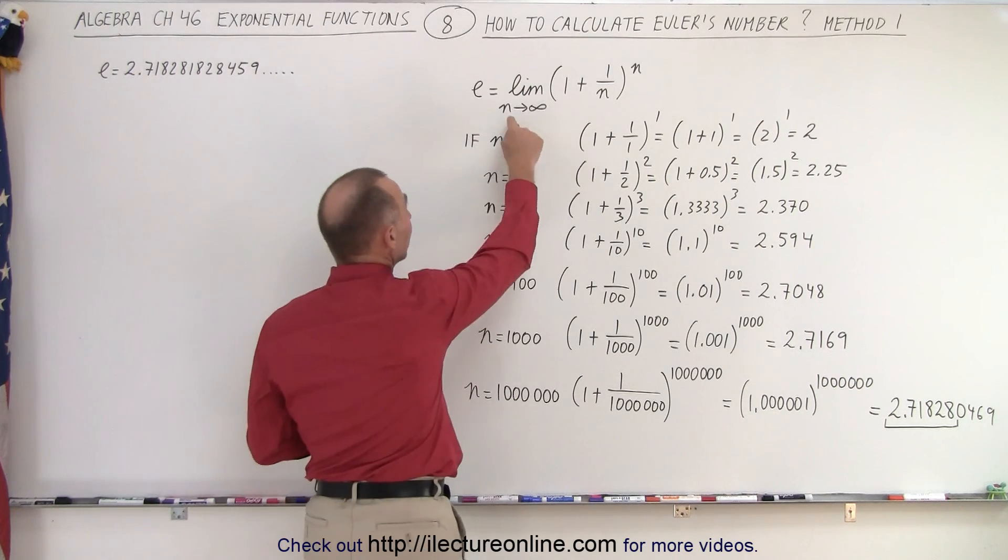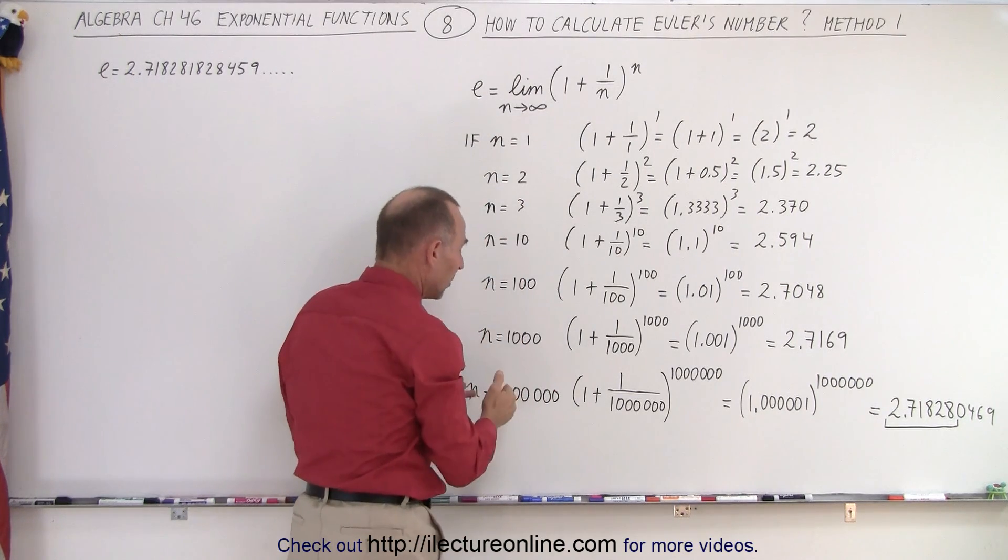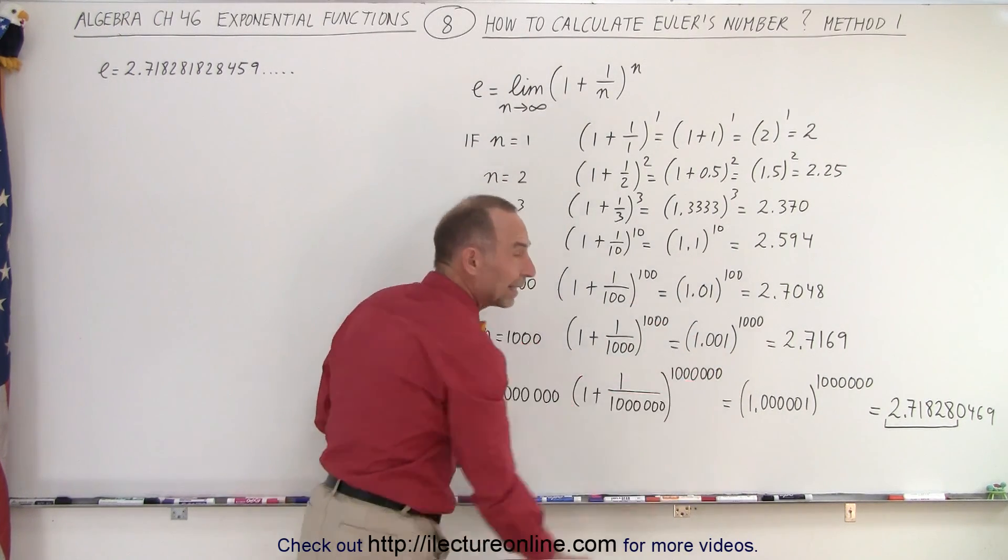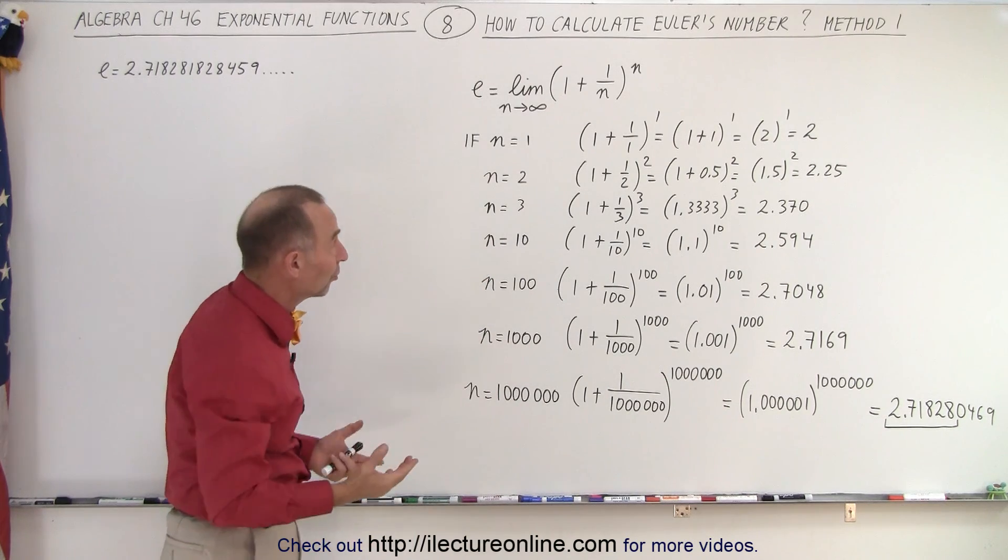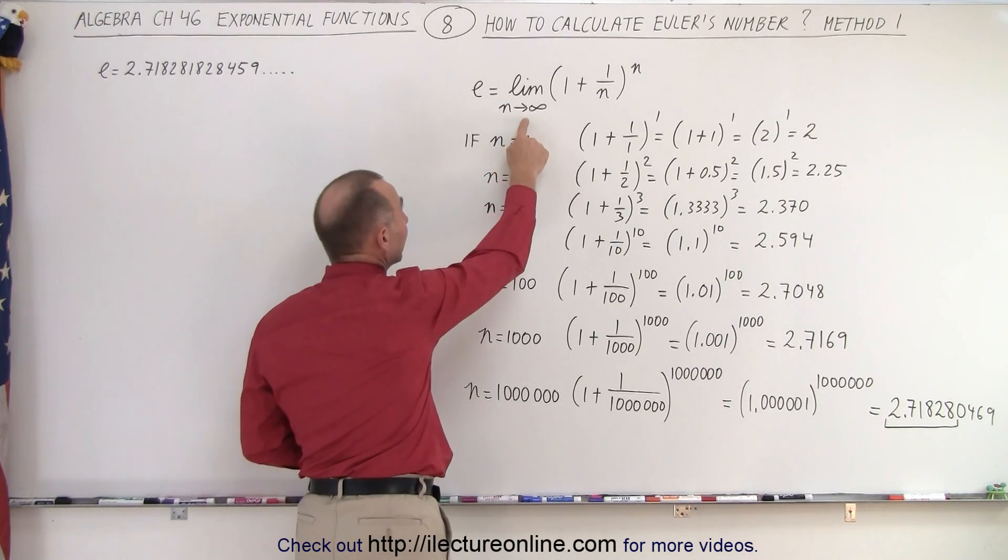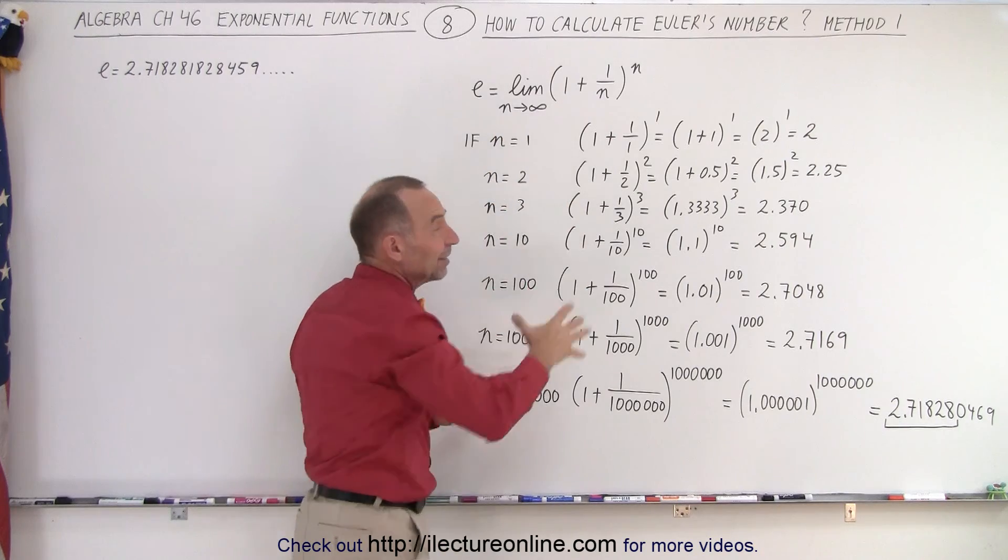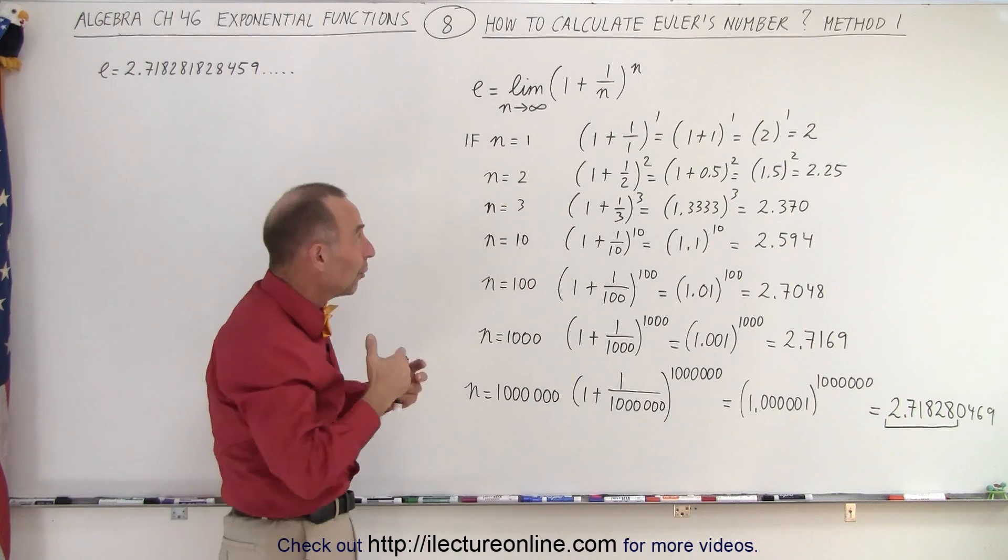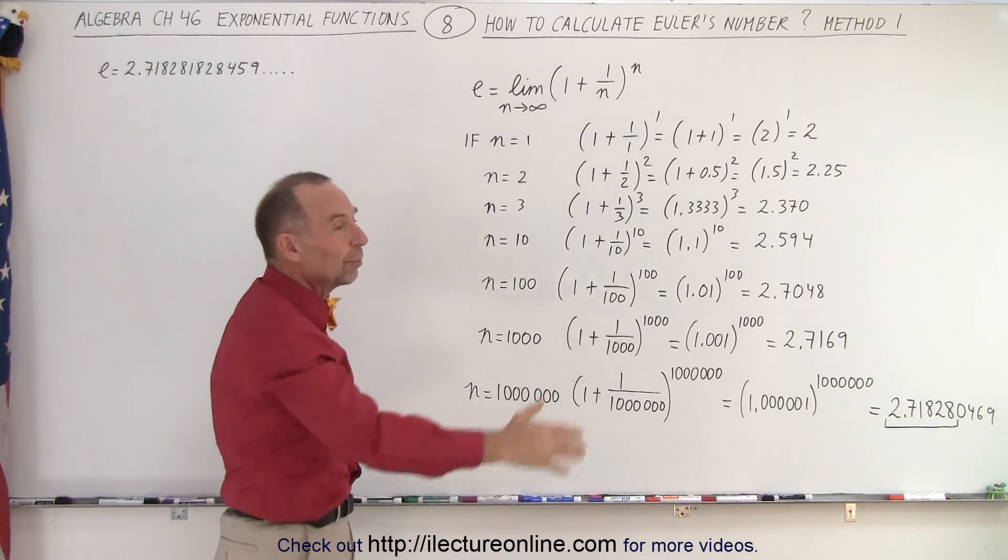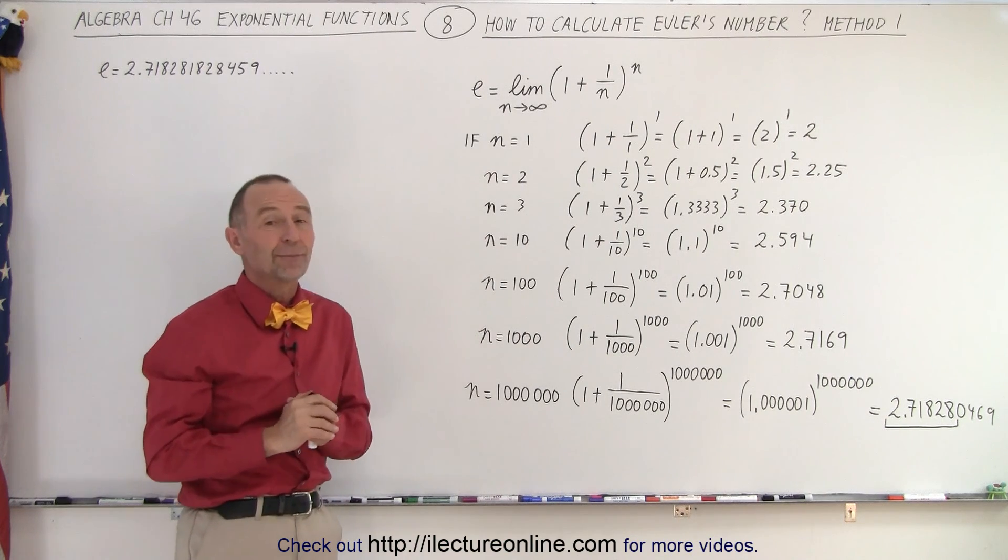And that's what we mean by the limit as n goes to infinity. The bigger we make n, the closer we're going to get to the actual number. Of course, we need to make it really big on the way to almost infinity to get really, really, really close.